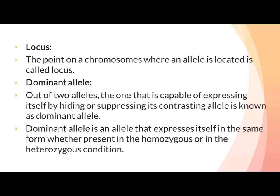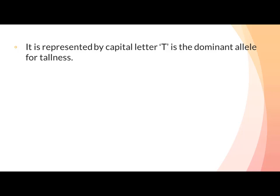مثال کے طور پر pea plant میں height کا character لیں — tall ہمارے پاس dominant ہے اور dwarf recessive ہے۔ اگر tall allele آئے تو homozygous یا heterozygous دونوں conditions میں plant tall ہی رہے گا۔ Dominant allele کو capital letter سے represent کرتے ہیں — جیسے tallness کے لیے capital T use کریں گے۔